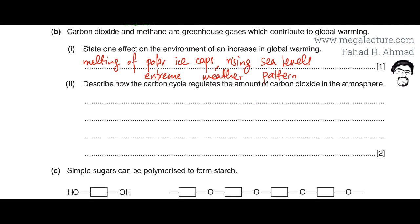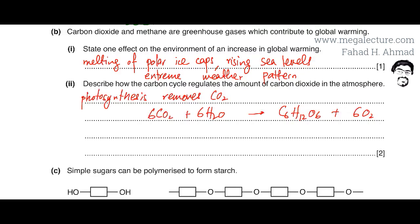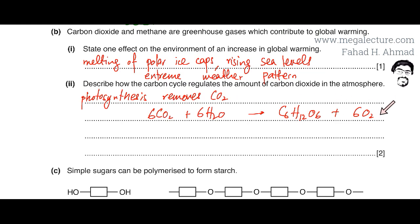The next part asks us to describe how the carbon cycle regulates the amount of CO₂ in the atmosphere. In the first part of the cycle, photosynthesis happens — plants using chlorophyll photosynthesize and remove carbon dioxide from the atmosphere. CO₂ and water react to produce glucose and oxygen, so photosynthesis converts carbon dioxide to oxygen and removes it from the atmosphere.